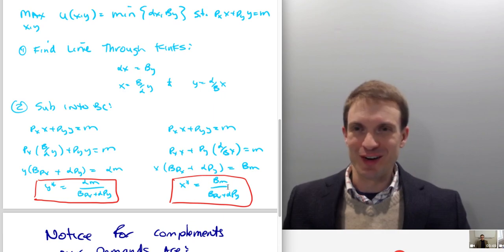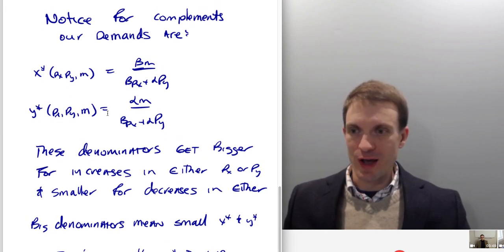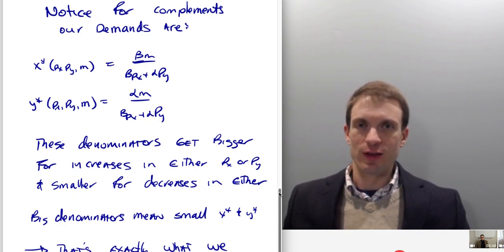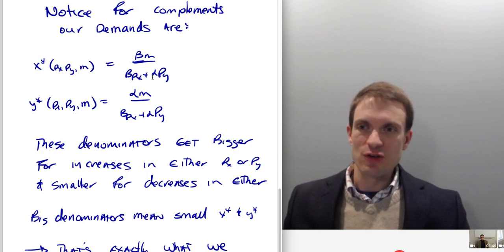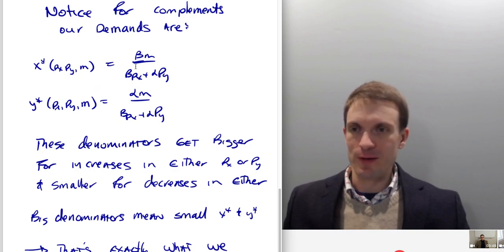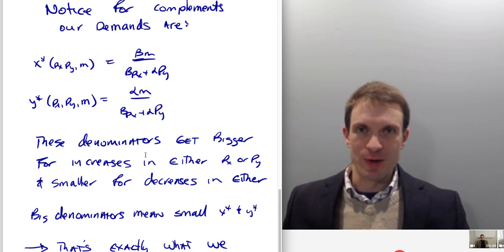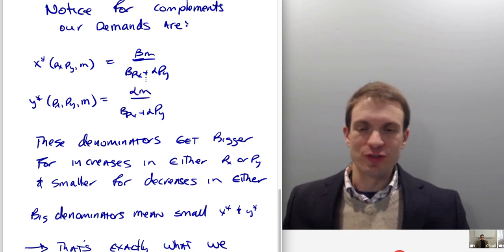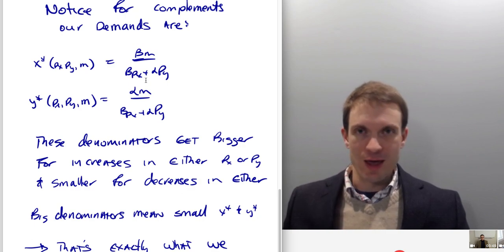It takes some time to reflect on our generic demands for goods x and y and pick up on some of the patterns. Notice the denominators get bigger for increases in either px or py. For larger denominators, we get a smaller fraction, meaning as the denominator gets larger, demand for that respective good gets smaller. That's exactly what we'd expect from complements behavior: as the price of a good rises, you buy less of that good by the law of demand, and you also buy less of any complementary good.